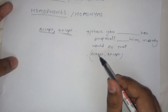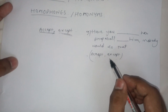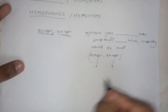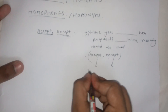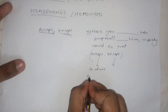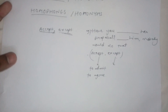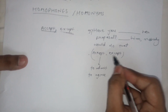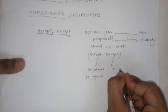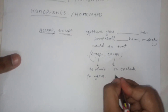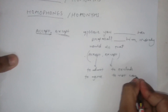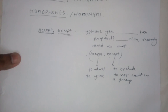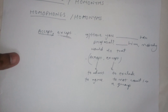Since both pronunciations are exactly the same, you need to understand which spelling to use — either 'a-c-c-e-p-t' or 'e-x-c-e-p-t' — in which blank space. To do this, understand their word meanings: 'accept' (a-c-c-e-p-t) means to admit, to agree to something. 'Except' (e-x-c-e-p-t) means to exclude, to not count something in a group.